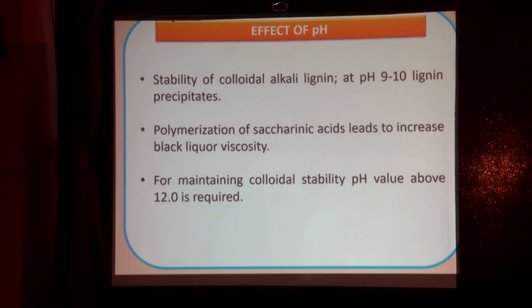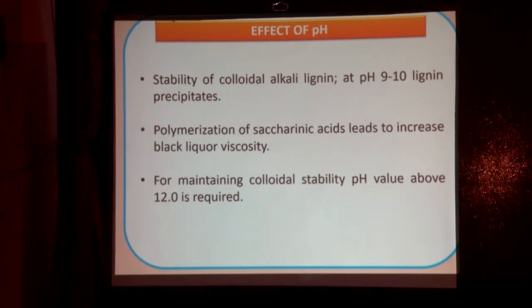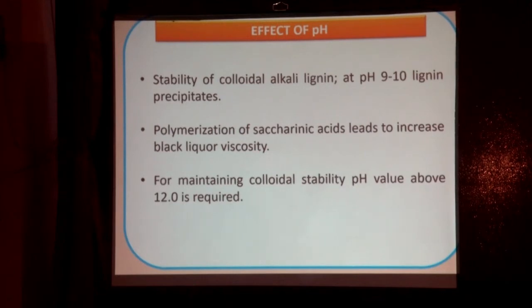When pH is low, saccharinic acid generated during pulping starts polymerizing. If it starts polymerizing, molecular weight increases, which substantially increases black liquor viscosity. Neglecting low pH can create havoc in your high-concentration evaporation due to viscosity problems. So monitor pH very closely — it should be 12.5 or minimum 12 plus.